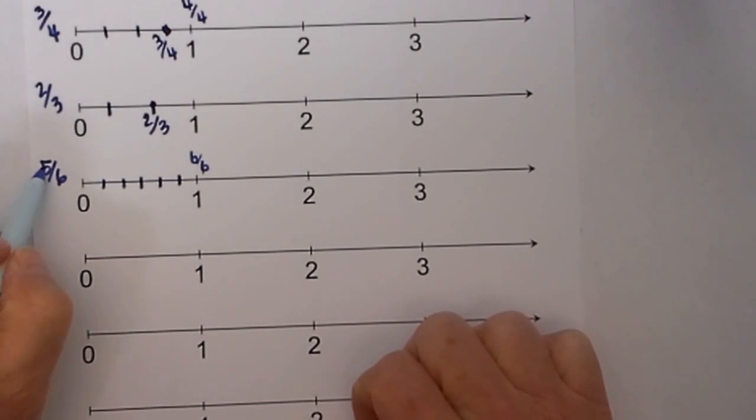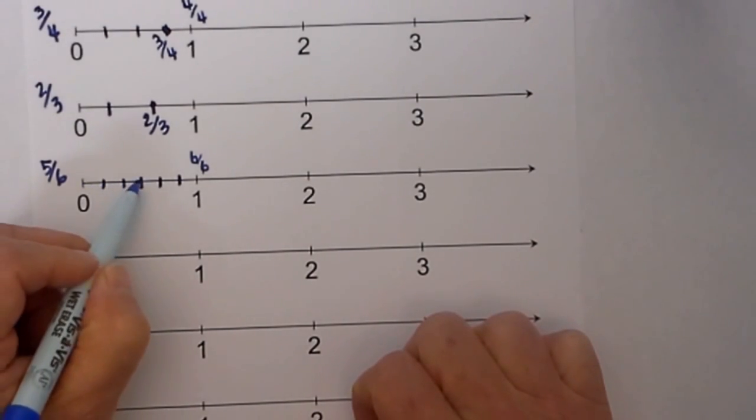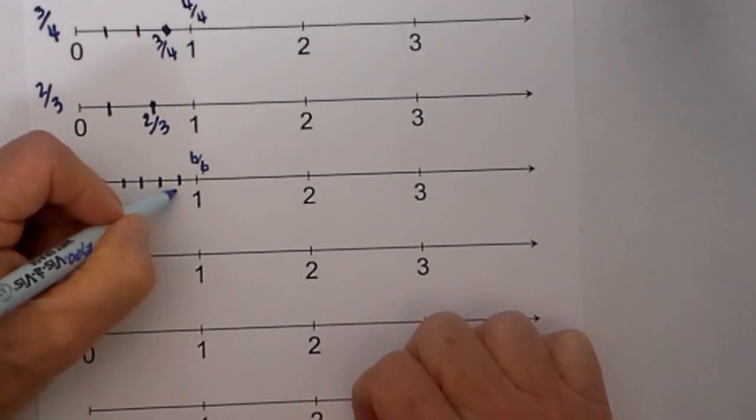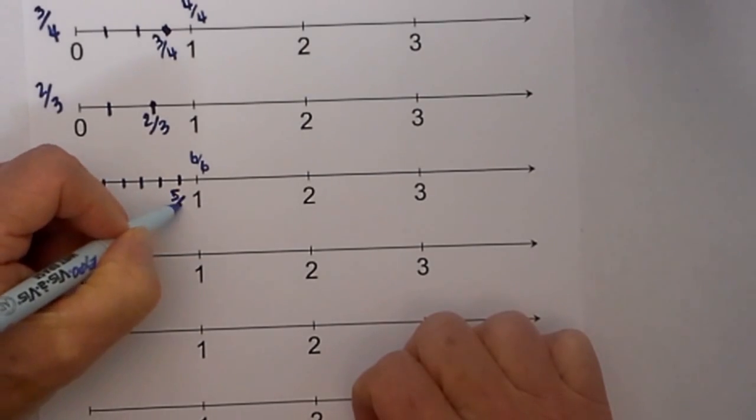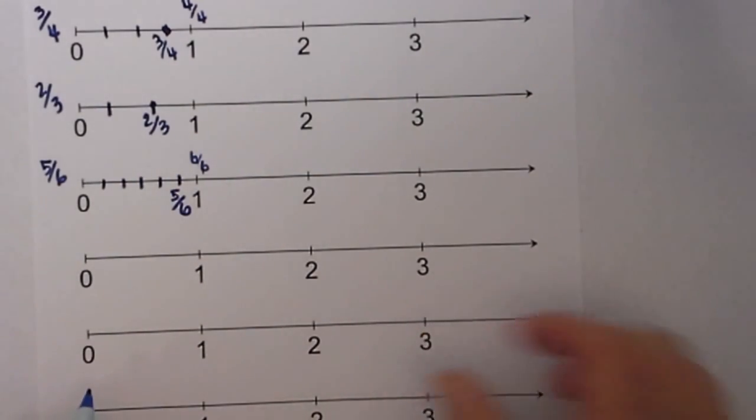So now we go over 5 spaces, 1, 2, 3, 4, 5 and so 5 sixths will be there.